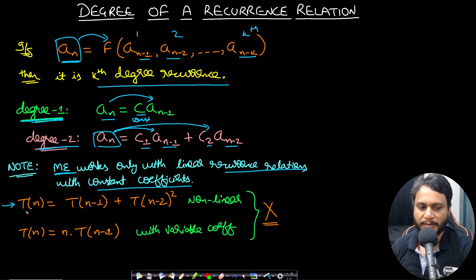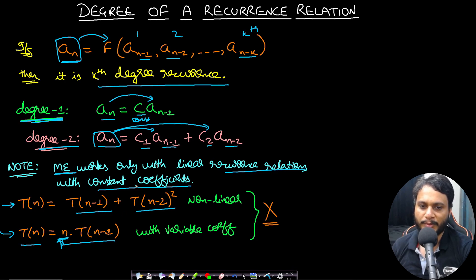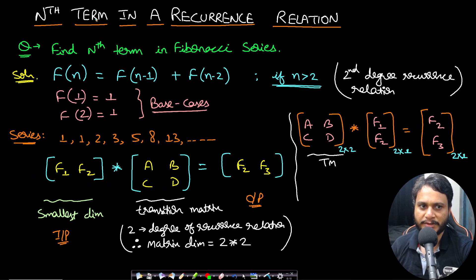Matrix exponentiation works only with linear recurrence relations with constant coefficients. For example, T_N = T_{N-1} + T_{N-2}² is nonlinear and therefore matrix exponentiation cannot be applied. Similarly, T_N = N × T_{N-1} has a variable coefficient, so matrix exponentiation cannot be applied there either.